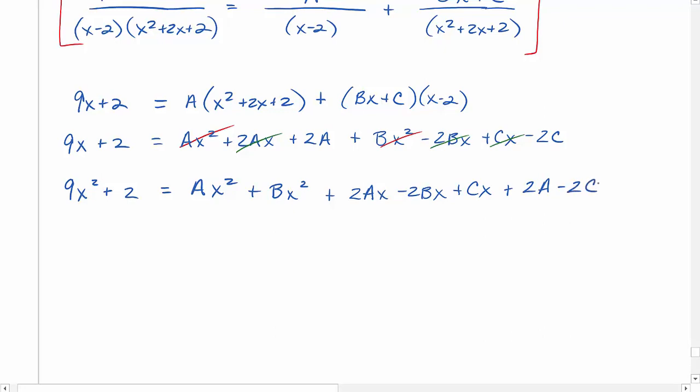And then we'll factor out our variables on the right, so we can start our correlation. You'll notice on the left-hand side, I don't have a quadratic term. On the right, I do have quadratic terms. So I want to put in a quadratic placeholder, just so I have something to equate my coefficients to.